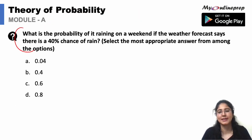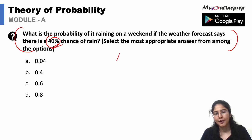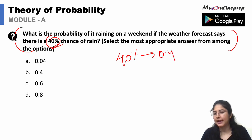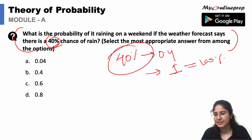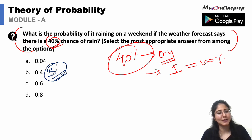First question: what is the probability of it raining on a weekend if the weather forecast says there is a 40% chance of rain? 40% chance means 0.4 because in probability we have 1 which equals 100%. So 40% chance means 0.4. The correct answer is option B, which is 0.4. A very easy question.